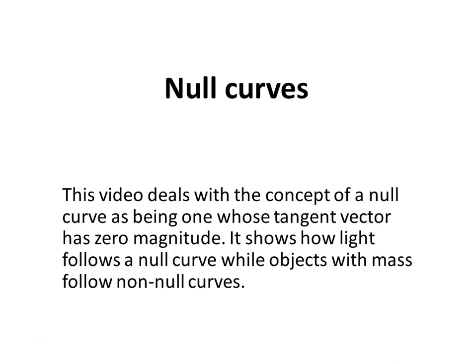This video deals with the concept of a null curve as being one whose tangent vector has zero magnitude. It shows how light follows a null curve while objects with mass follow non-null curves.